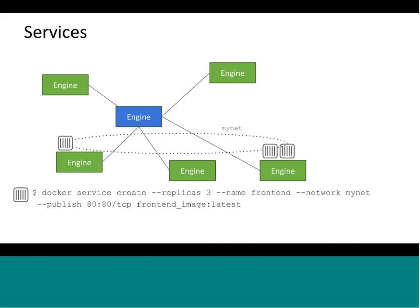Once you've created the cluster, you can use Docker services. A Docker service is kind of the new Docker run. When you start a service, you specify an image — say frontend-image, redis, or nginx — and you want to run three replicas of it on your cluster. You give the service a name, assign it to an overlay network (in this case MyNet), and publish port 80, mapping container port 80 to cluster port 80. So now you have three instances of your service running.